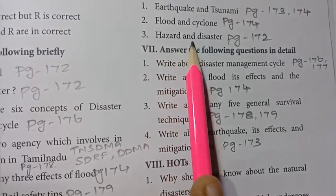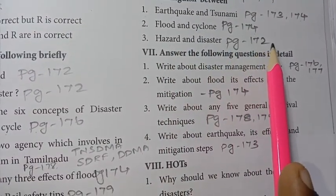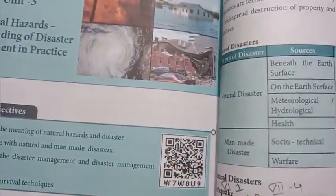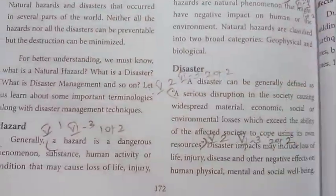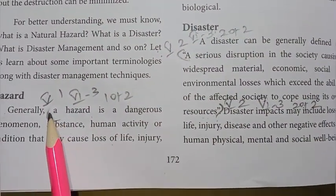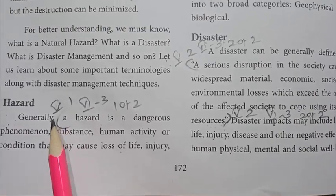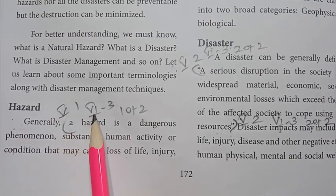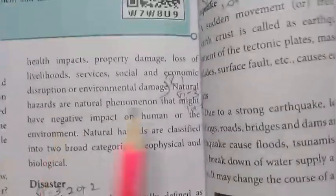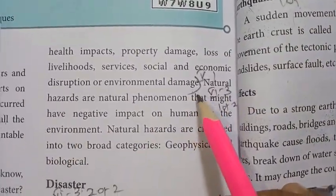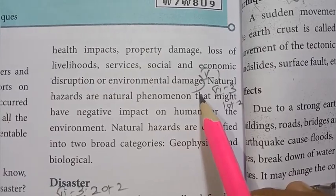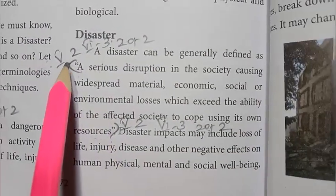Third distinction: hazard and disaster. Refer to page number 172. For hazard: look at the definition involving environmental damage. For disaster: look at 'serious disruption.' Write the answer in the box format for the sixth section, third question.